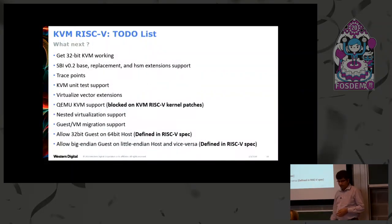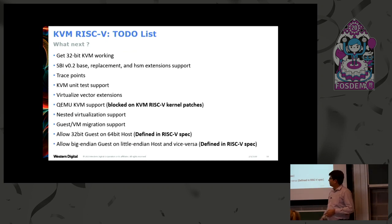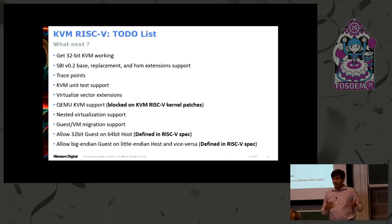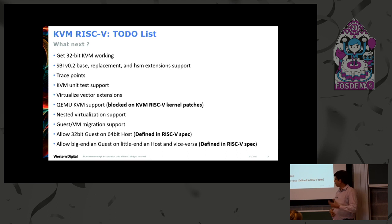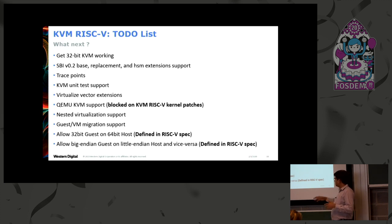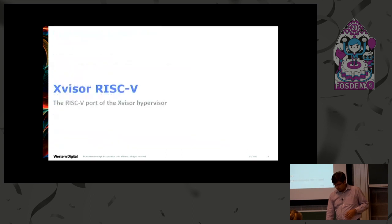We are currently holding KVM RISC-V upstreaming — we are working in the background but not upstreaming anything because we want the KVM RISC-V kernel support to be merged first. The TODO list includes: getting 32-bit working, adding SBI 0.2 support, trace point support, KVM unit test support, virtualized vector extension, QEMU KVM support, nested virtualization support, migration support, and support for 32-bit guest on 64-bit host and big-endian guest on little-endian host.